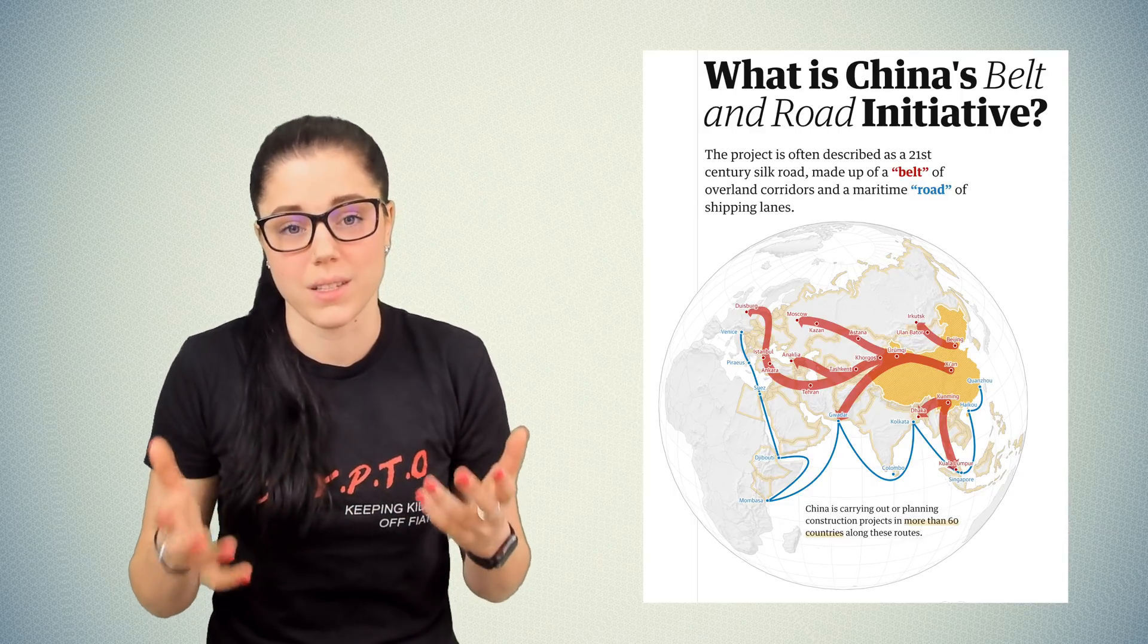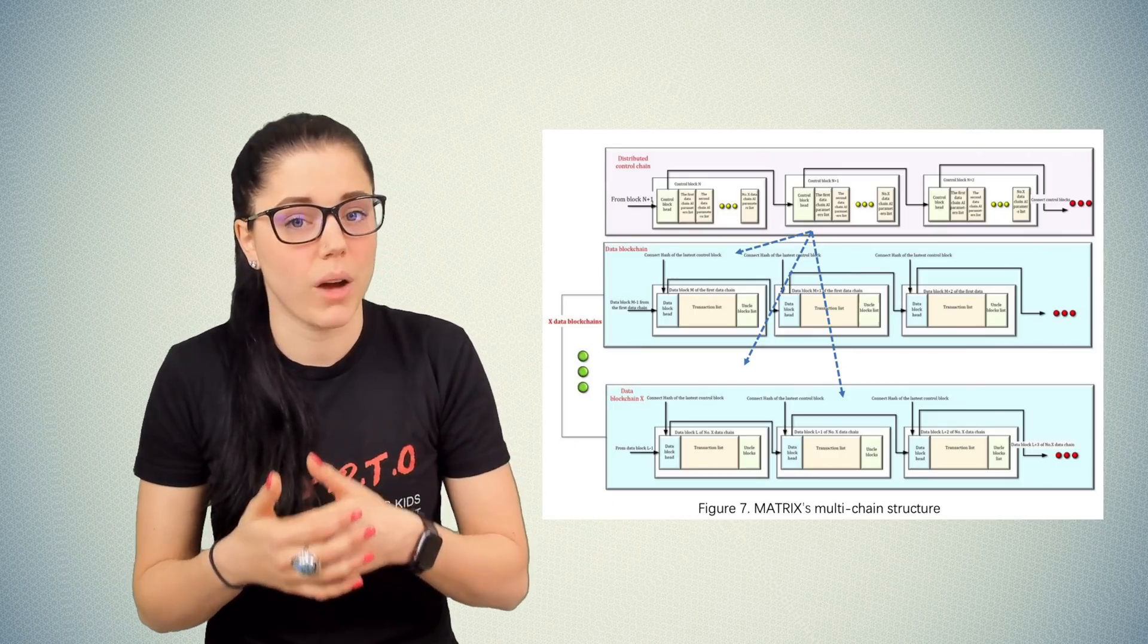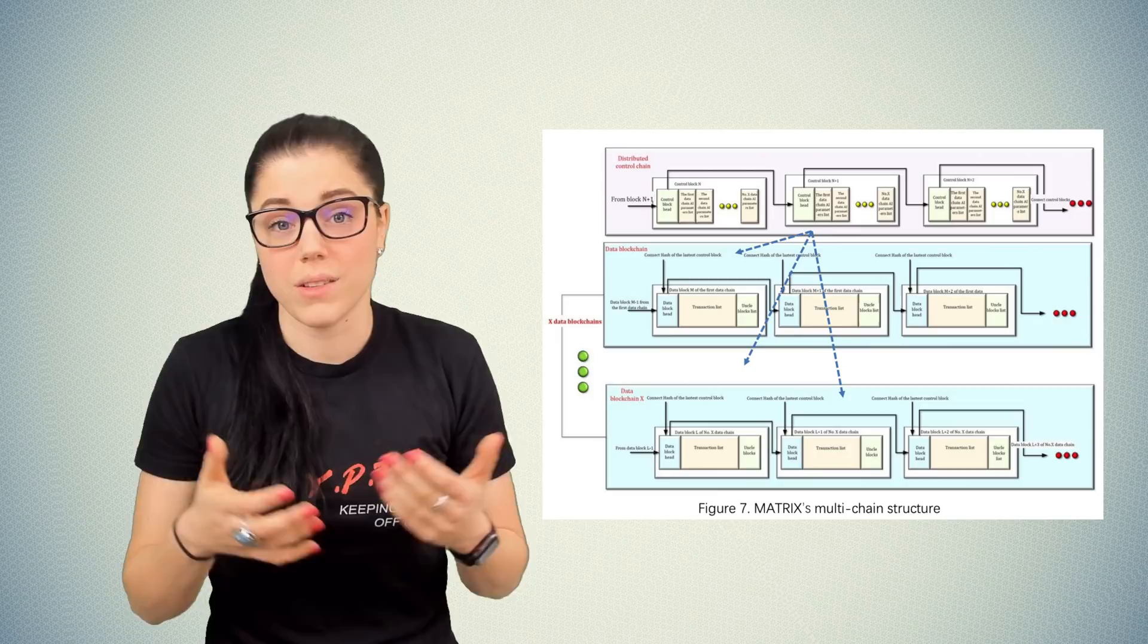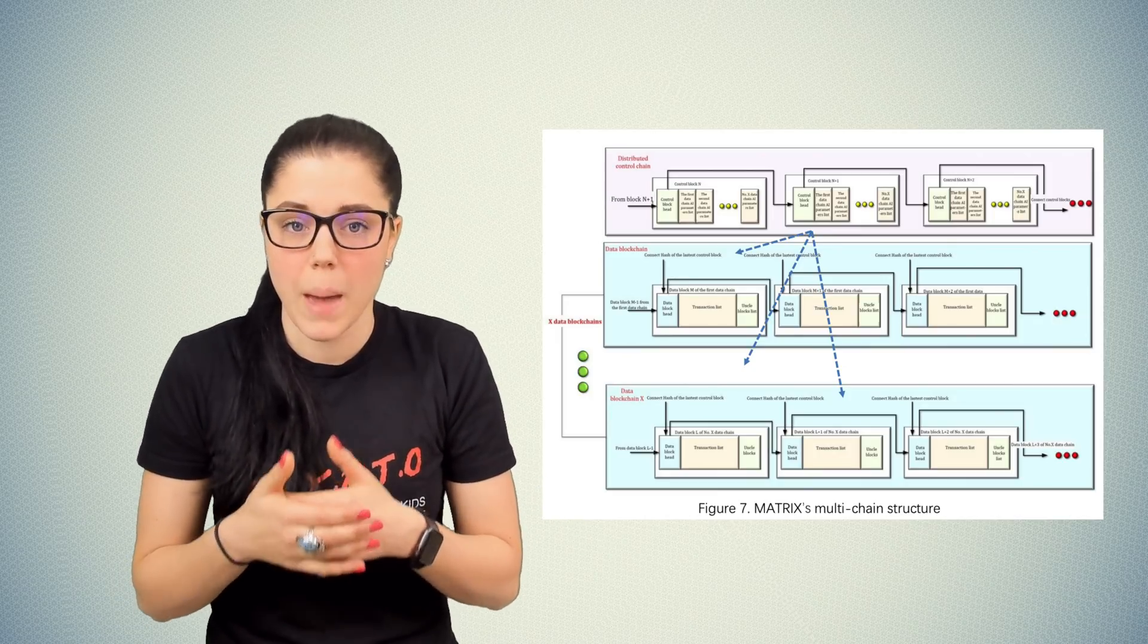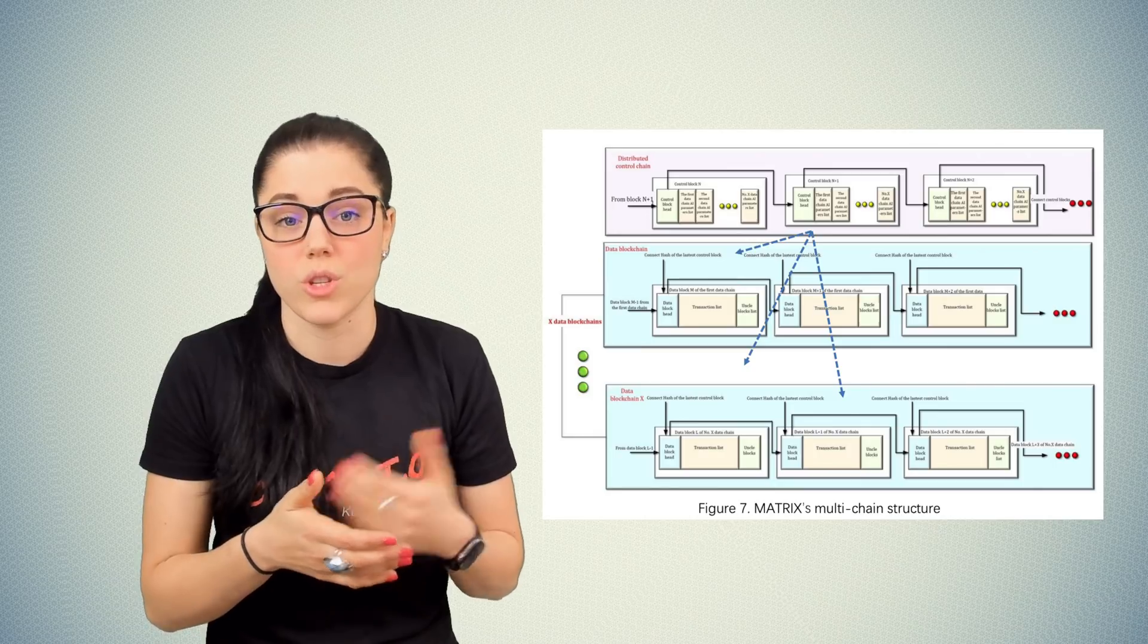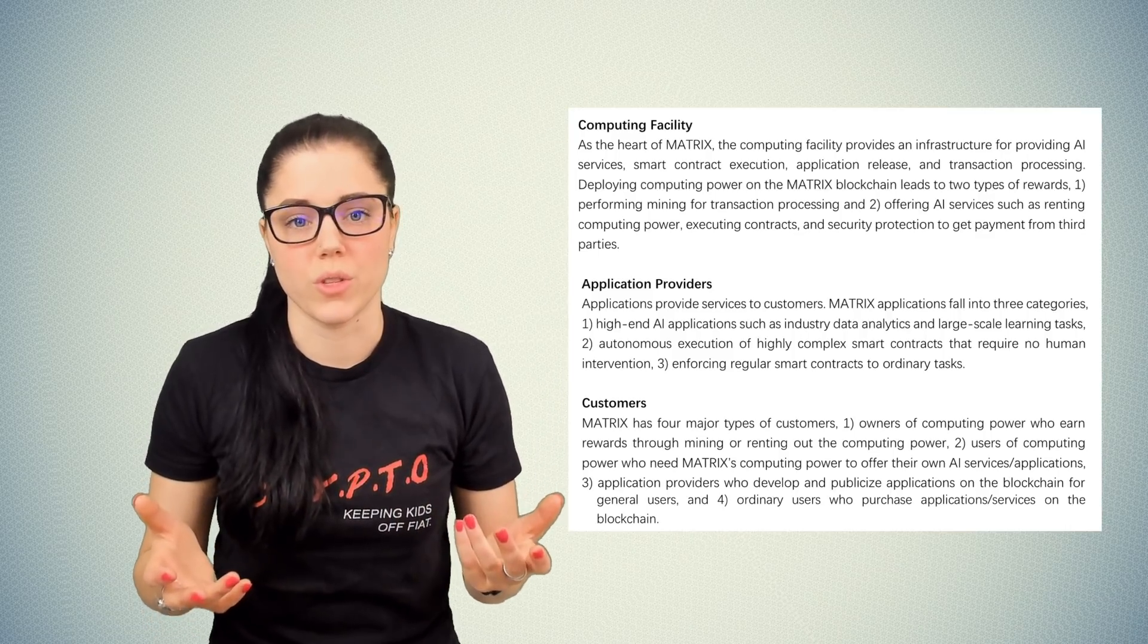Matrix also boasts a multi-chain structure. It will have the ability to run a public and private chain on the platform. It also allows the integration and interoperability of public chains being completely public and private chains being coordinated with security access features and control mechanisms.